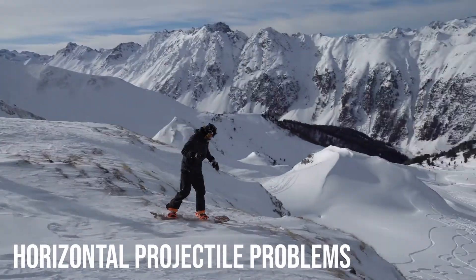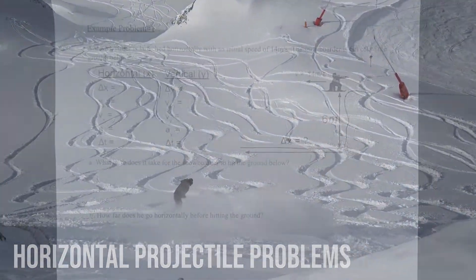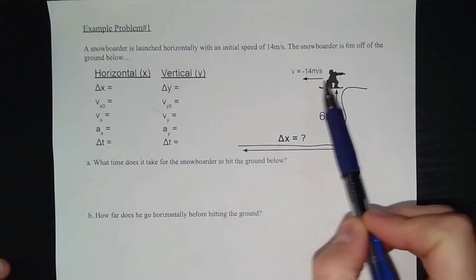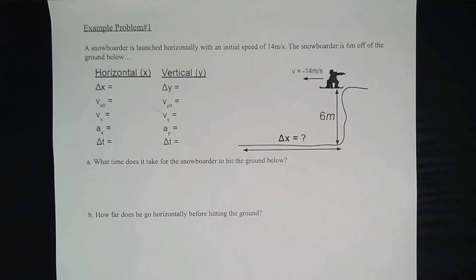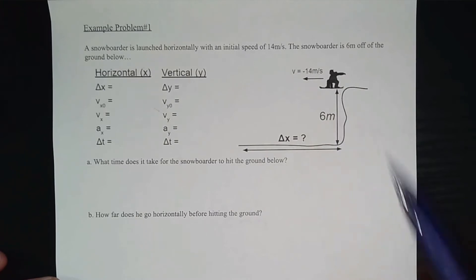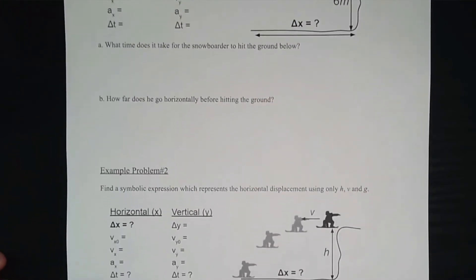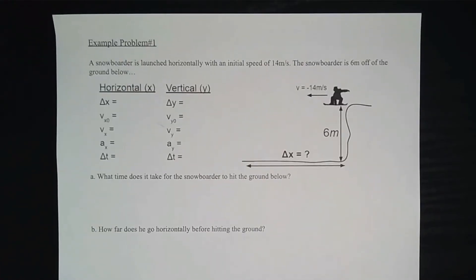In this video I'm going to walk through two example horizontal projectile problems where something is launched into the air not at an angle but just horizontally, and they're only under the influence of gravity assuming that air resistance is negligible. We're going to walk through one example quantitatively using values and numbers, and then for the last part of the video we'll think through things symbolically, as required in AP Physics 1.